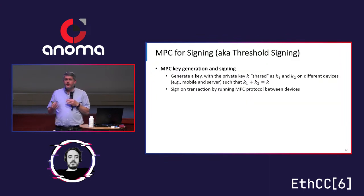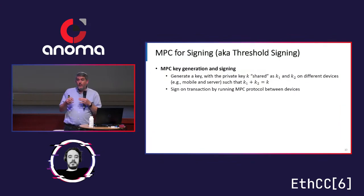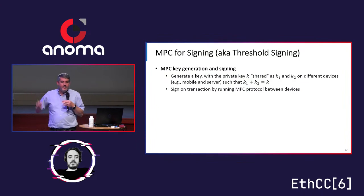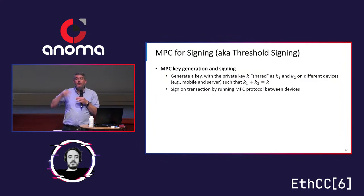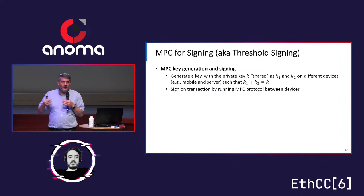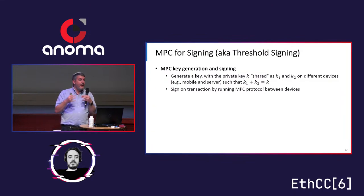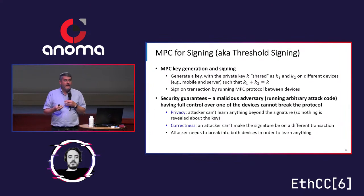So how do we use MPC for signing, also called threshold signing? You generate a key in a shared way that sums up to the real key. I get K1, the other party gets K2 — thinking about two parties right now — and K1 plus K2 equals K. So if the key was the number 100, I might have 33 and the other party 67, but it could be any possible combination. That also means that any single value gives no information about the key — if I only have K1, I actually have no information about K. Then you sign a transaction by running an MPC protocol between these two parties, sending messages back and forth, and at the end getting a signature.